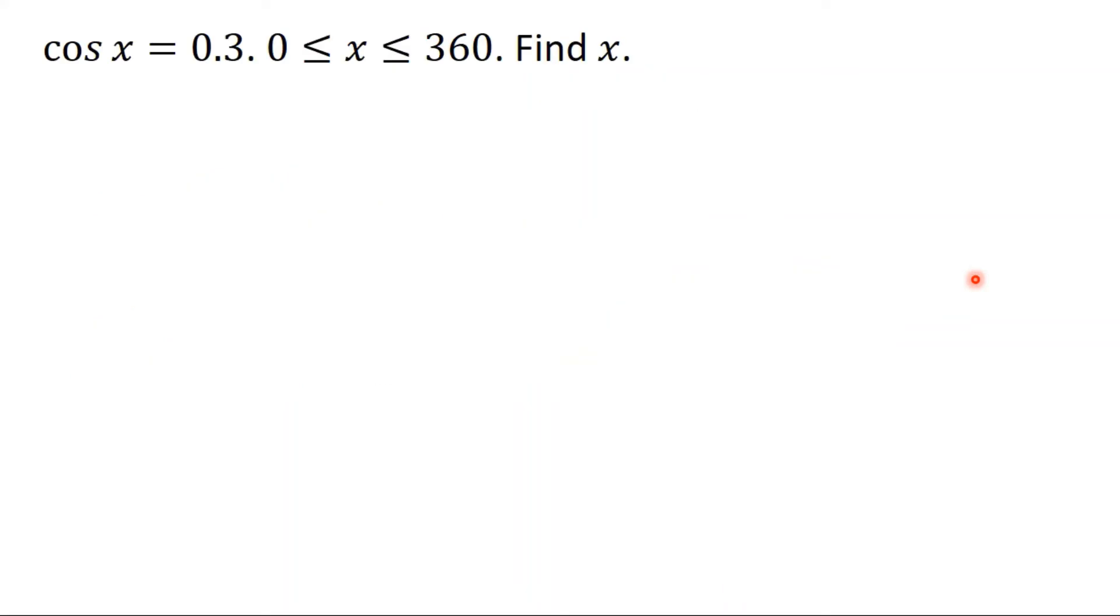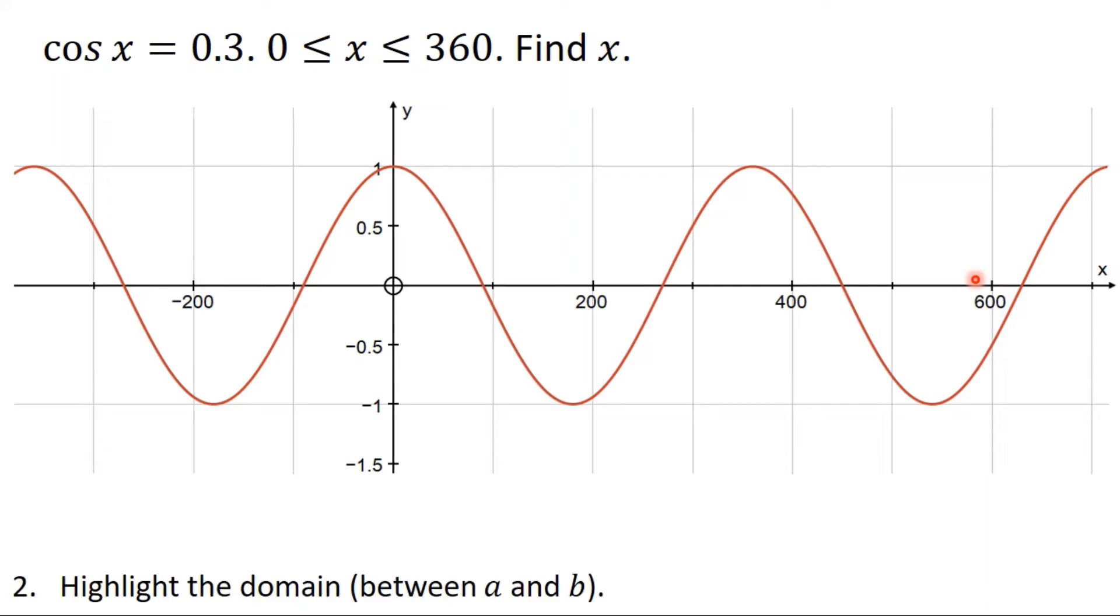So if I've got a question like this, cosine of x is 0.3, x is between 0 and 360, what is x? I can follow those five stages. Number one, I'm going to sketch a cosine graph. Number two, I'm going to highlight the domain I'm talking about. So it says here between 0 and 360, so I'm going to highlight that domain.